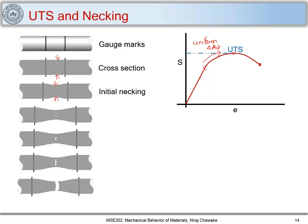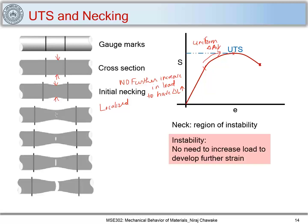At this point, I don't need any further load to cause deformation. No further increase in load is needed to have increase in delta L. This is because the cross-section area is decreasing, which causes the deformation to get localized — I have localized deformation. This neck is nothing but a region of instability, because there is no need to increase load to develop further strain. From UTS to fracture, there is no further increase in load but there is an increase in strain.